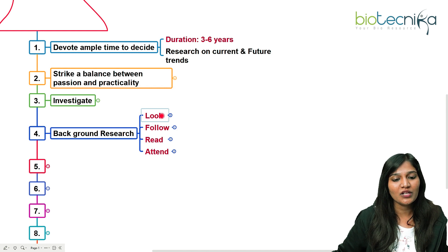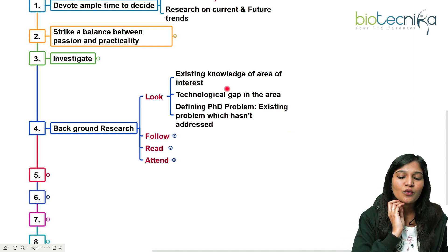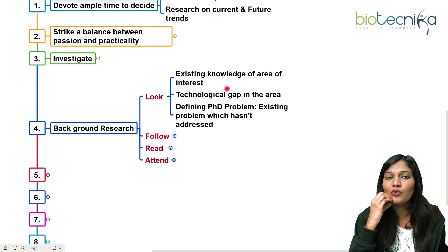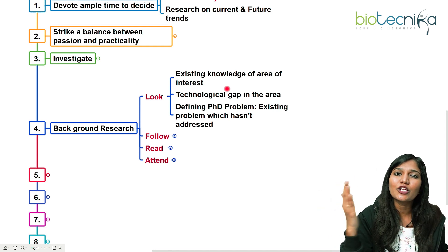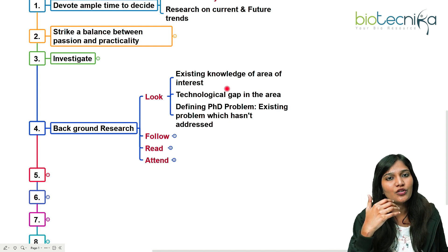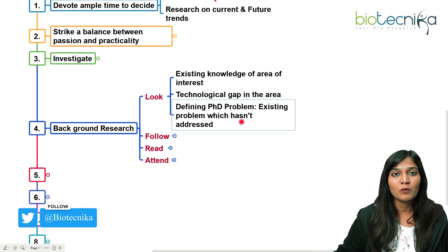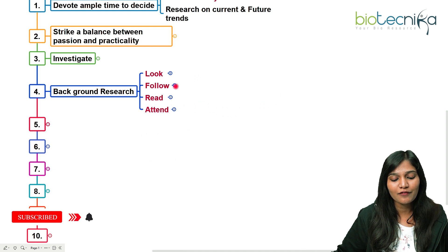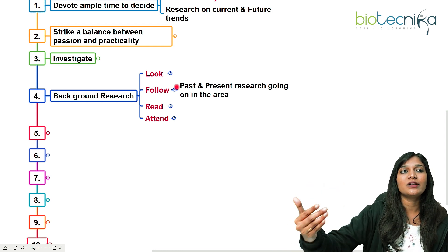Next is the background check, which is very important. Spend a lot of time determining whether you have sufficient knowledge in the specific area. For example, in breast cancer, do you know all the relevant pathways in cancer biology? In stem cell research, do you know all the signaling pathways? Identify any knowledge gaps or technological gaps in your specific area of interest. Then move on to defining your PhD problem — find an existing problem that has not yet been addressed and take up that kind of topic.